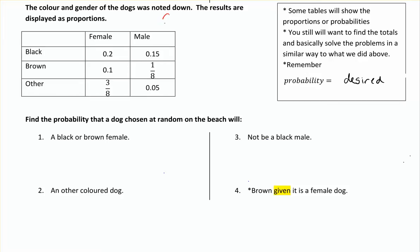A really important thing to note: you have to convert percentages to decimal or fraction. If you try to do the math using percentages, you're going to be in big trouble. So remember, if you've got something like 75%, divide it by 100 and you'll get 0.75. You want to use the decimal, not the percentage, if you're using these for calculations.